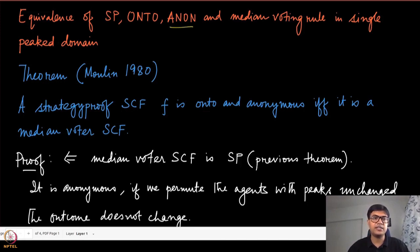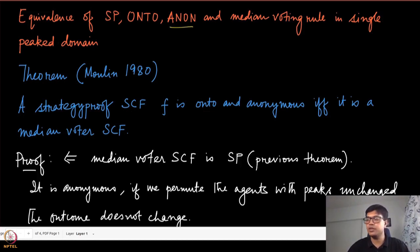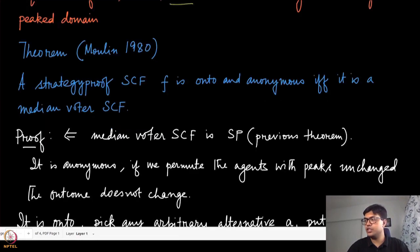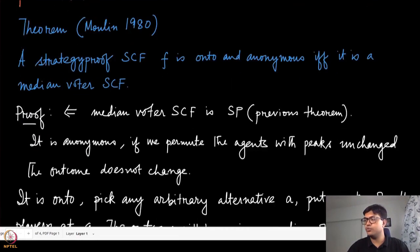The theorem states that a strategy-proof social choice function f is on-to and anonymous if and only if it is a median voting social choice function. In this module we are going to prove this, at least in part, and continue the proof in the next module.